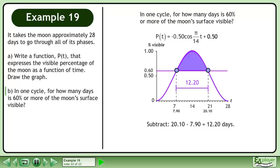Subtract the two values to get 12.20 days. 60% or more of the moon's surface is visible for approximately 12 days each cycle.